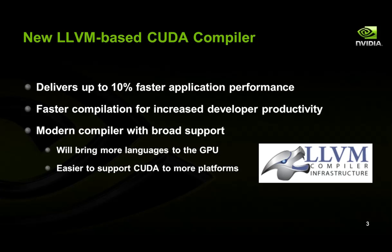First is the new LLVM-based compiler. We've transitioned to using an LLVM-based compiler for Fermi architecture GPUs and later. One of the great things about the new compiler is that we're finding many applications get up to 10% faster simply by recompiling using the new compiler.